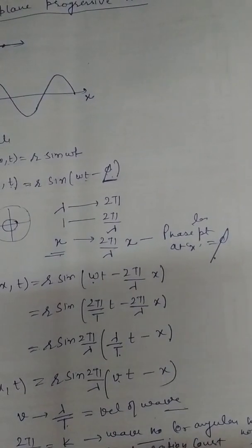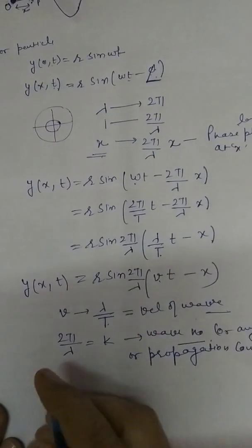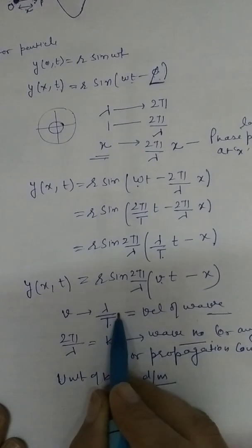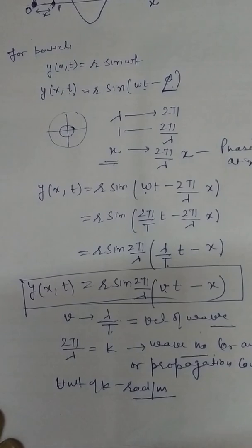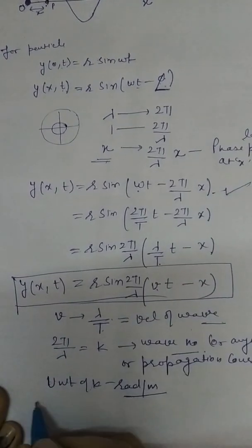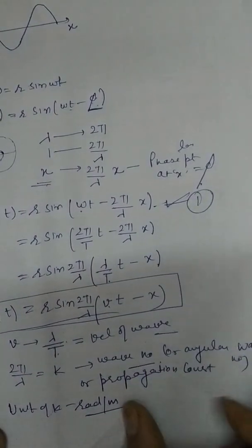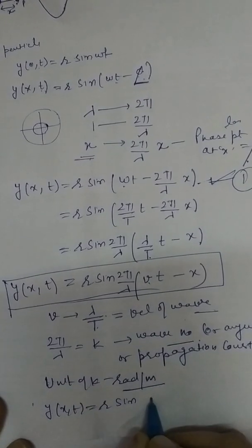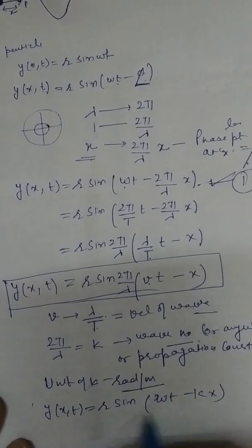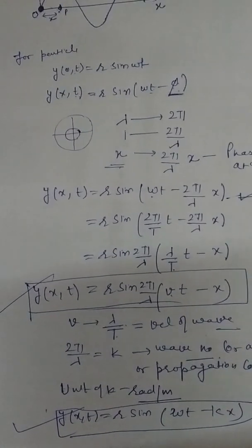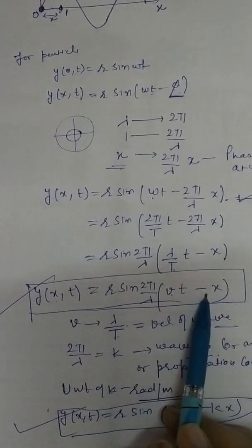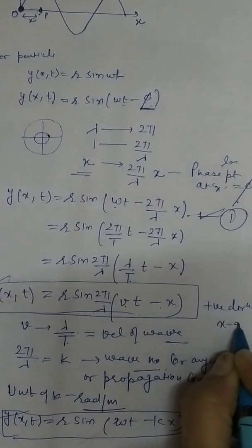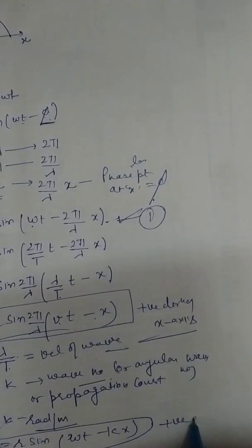Here, 2π/λ is called k — the wave number or angular wave number, also called propagation constant. Its unit is radian per meter. Another standard form is y(x,t) = r sin(ωt − kx). This is equation number one — the equation of a plane progressive wave along the positive direction of the x-axis.